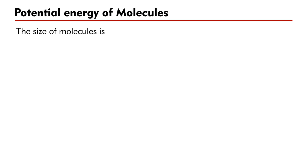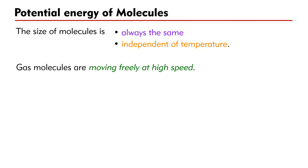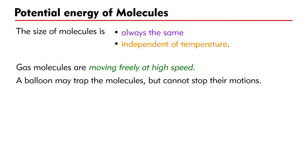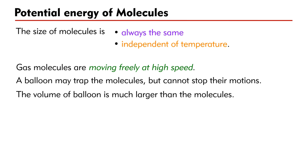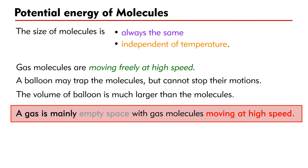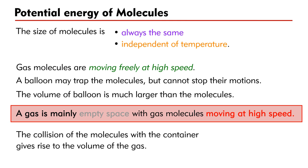It is important to note that the size of molecules is always the same and is independent of temperature. When water vaporizes, the bonds that hold the molecules closely packed in liquid are broken. Therefore, they can move freely at high speed. We may use a balloon to trap the molecules, but we cannot stop their motion. The molecules keep colliding with the balloon so that the balloon has a volume very large compared to the size of the molecules. In other words, a gas is mainly empty space with a certain amount of gas molecules moving at high speed. The collision of the molecules with the container gives rise to a volume 1600 times larger than the gas molecules themselves.